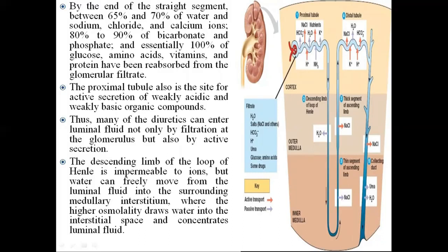The proximal tubule is also the site for active secretion of weakly acidic and weakly basic organic compounds, so many diuretics can enter luminal fluid by active secretion in addition to filtration at the glomerulus. The descending limb of the loop of Henle is impermeable to ions, but water can freely move from the luminal fluid into the surrounding medullary interstitium, where higher osmolality draws water in and concentrates the luminal fluid.